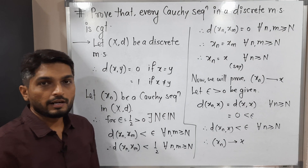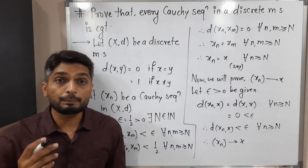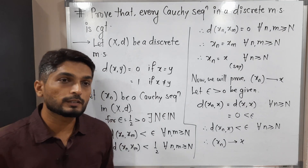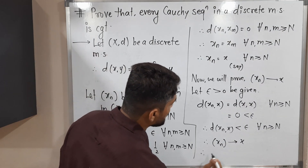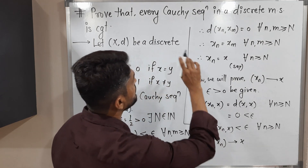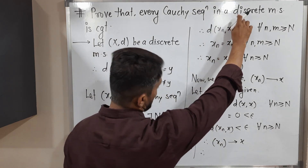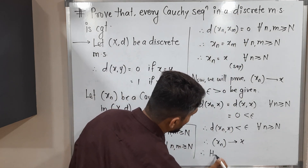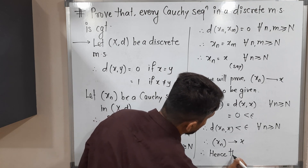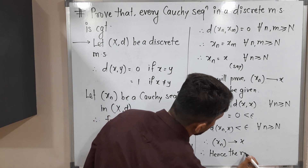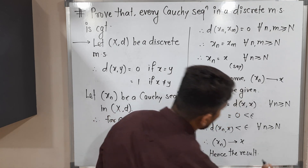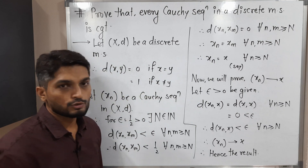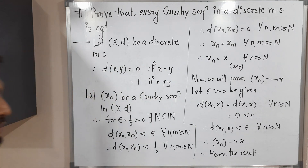So we started with any Cauchy sequence and we proved it is convergent. Therefore, every Cauchy sequence is convergent in a discrete metric space. Hence the result. Thank you. See you in the next video.